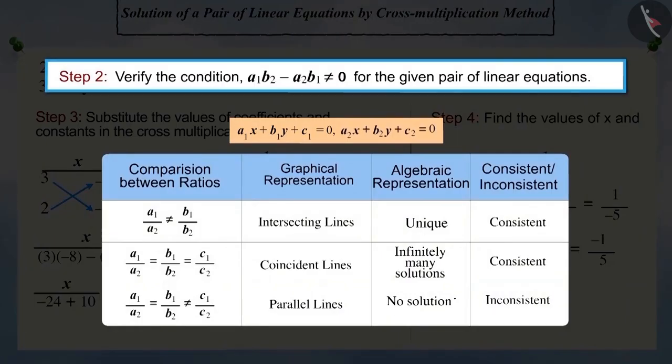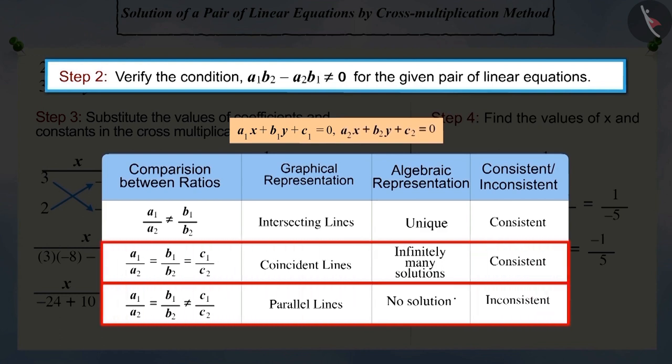Pay attention, if in step 2, the condition of a1b2 minus a2b1 is not equal to 0 is not satisfied, then the linear equation will have either infinite solutions or no solution at all. You can test it using this.